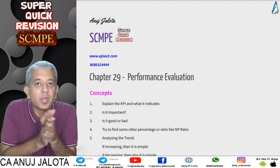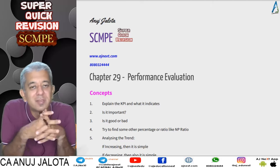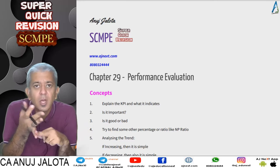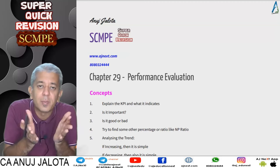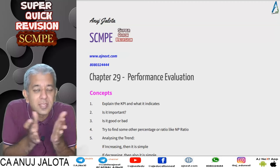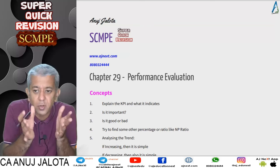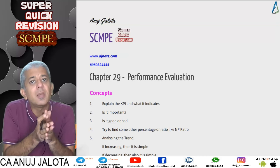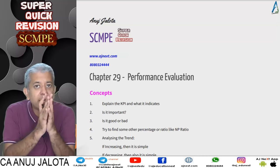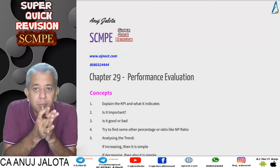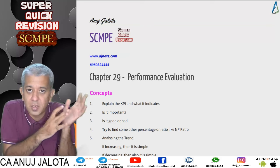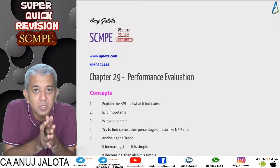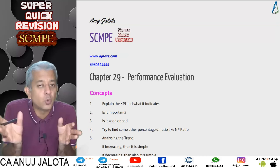Welcome back to our super quick revision series. Today we are doing performance evaluation. You've already seen glimpses of this chapter in topics like the balanced scorecard, performance prism, and performance pyramid. A lot of data will be given, and we have to analyze that data. Once analyzed, try to think about what suggestions can be given. Most of the data will be representing KPIs — key performance indicators. This chapter is quite vast, to be very honest.